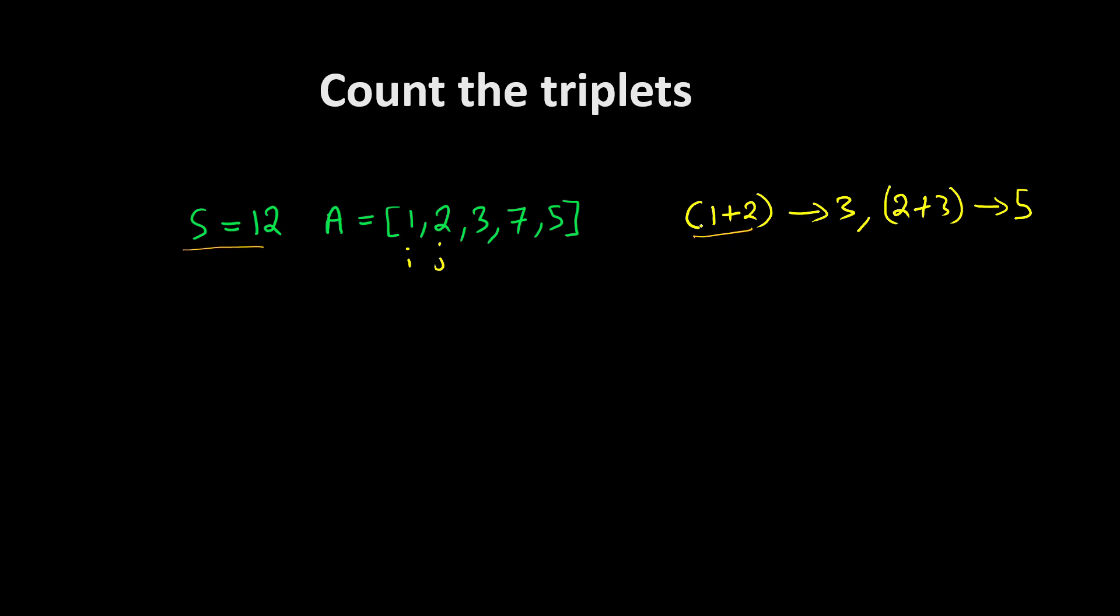When such a case arises, we call that triplets. There are three values where adding two numbers gives the third number. If such a value is there, then we will count the triplet. This is the first triplet, and this is our second triplet.